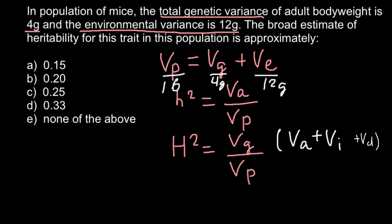Now we can use all this information in order to solve this problem, and we are going to use this formula for broad sense heritability. So H² would equal variance genetics, and this is 4 grams.